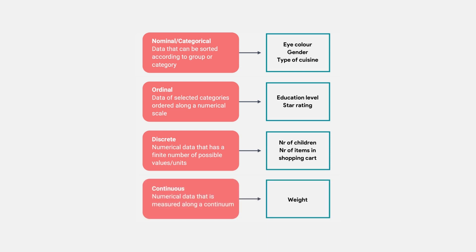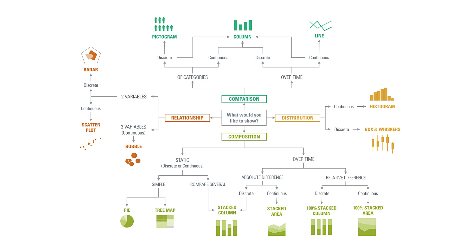The fourth type of data is called continuous — this is numerical data that is measured along a continuum. For example, this can be weight: 150 pounds, 151, 151.5 pounds, and so on. Once you have defined which type of data you're working with, you can use this map to always choose the best visualization. The only thing you have to do is understand what you would like to show. To make this concept even more clear, let's do an example.